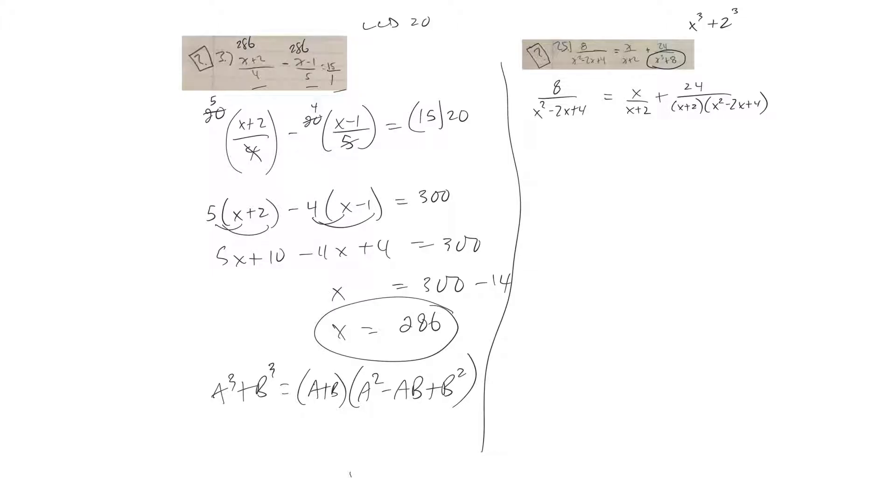Okay, now the lowest common denominator would be both of these, right? So I'd multiply every term by both of those, x plus 2 times x squared minus 2x plus 4, and multiply this term by the same thing and this term by the same thing.